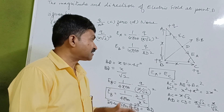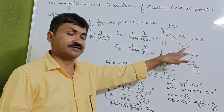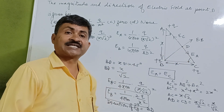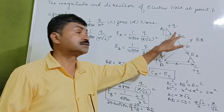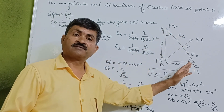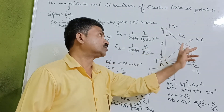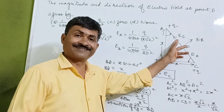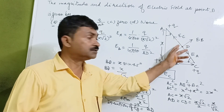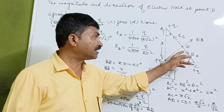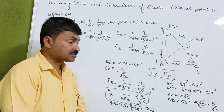This is a very simple problem. If we know the electric field method, we put a unit positive charge here. Because all the charges are of positive nature, they are all repelling. The fields from A and C are equal in magnitude and opposite in direction, so they cancel each other. Only EB remains acting, and we have calculated it. This is how we solve this type of problem.